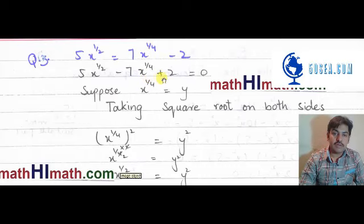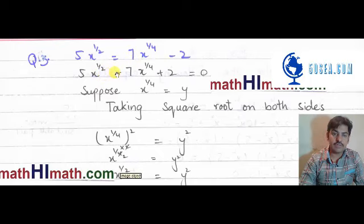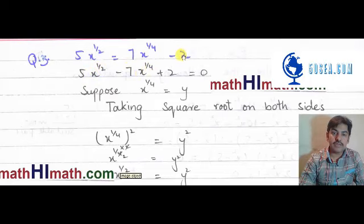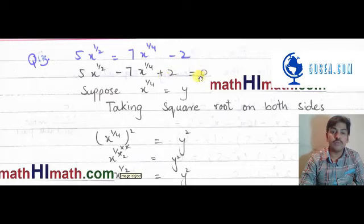सबसे पहले तो हम इसे rearrange करते हैं। यहाँ पे 7 into x raised to power 1 over 4 यह plus का है, यह जब equal sign के दूसरी side पर जाएगा तो यह minus में आ जाएगा। यह आपके पास बनेगा: 5 into x raised to power 1 over 2 minus 7 into x raised to power 1 over 4, और यह 2 minus में है तो equal sign के दूसरे side पर 2 plus में आ जाएगा, that is equal to 0.